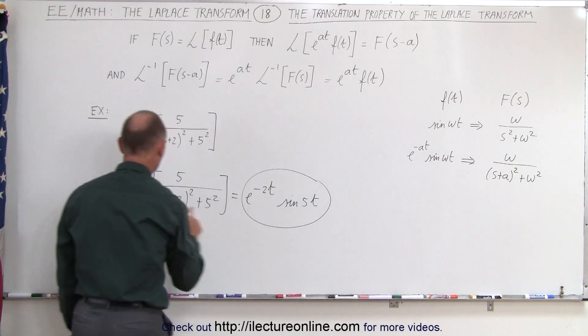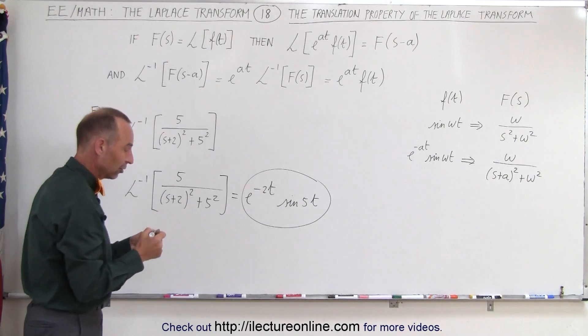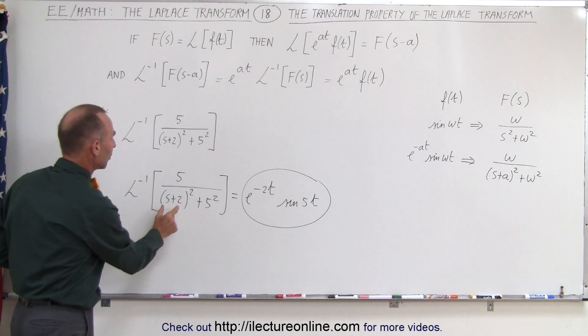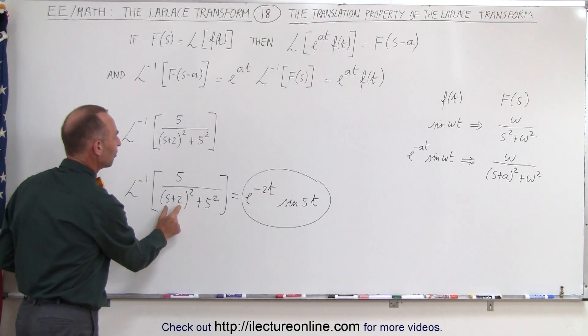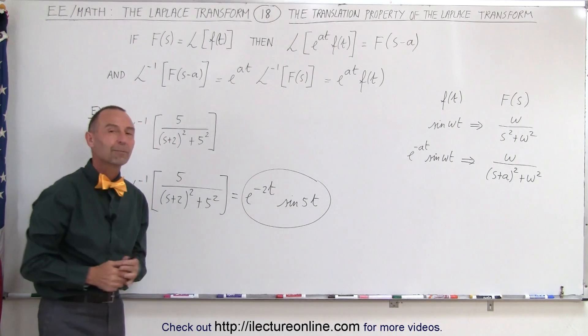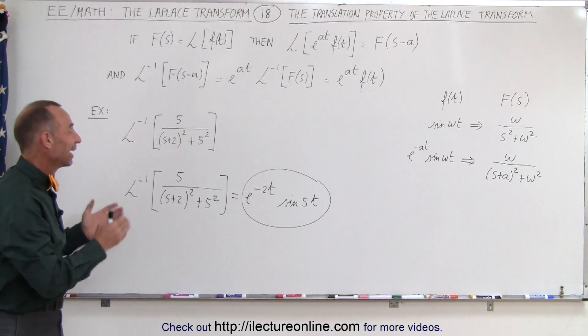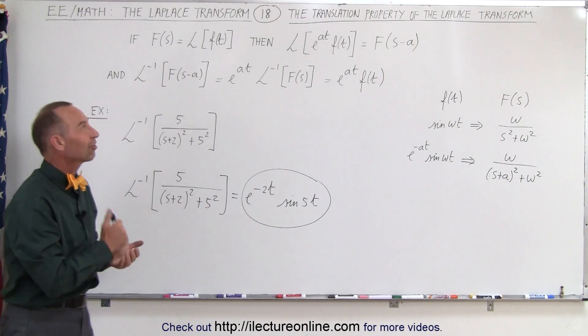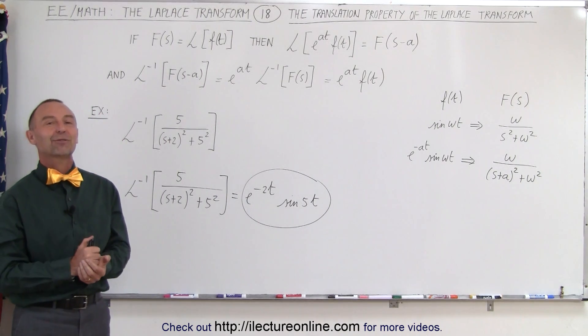and this is the inverse Laplace transform of this function. Notice that we use the translation property by realizing that the s plus 2 simply means that we have to add an e to the minus 2t term, at least multiply it by an e to the minus 2t term, in order to get the proper answer, and that's what we mean by the translation property of the Laplace transform.